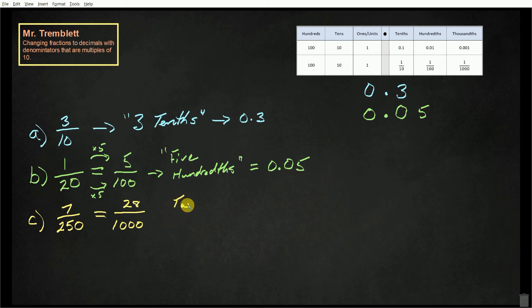So I could write that out as twenty-eight thousandths. I'm going to write it exactly the way I'm saying it, twenty-eight thousandths.